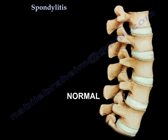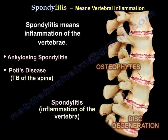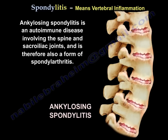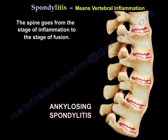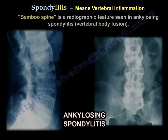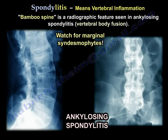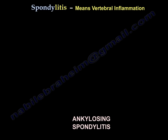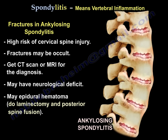Spondylitis is inflammation of the vertebrae, like ankylosing spondylitis or TB. In ankylosing spondylitis, it progresses from a stage of inflammation to a stage of fusion, giving you bamboo spine. Watch for marginal syndesmophytes. There is a high risk of C-spine fracture, which may be occult — you may need CT scan or MRI to diagnose it. Neurological deficit and epidural hematoma may occur, requiring laminectomy and posterior spine fusion.